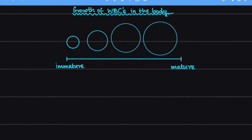WBCs grow from the immature form to the mature form in the body. When we have an increase in the immature forms of the WBC, we call it a left shift because we are moving on the left side.